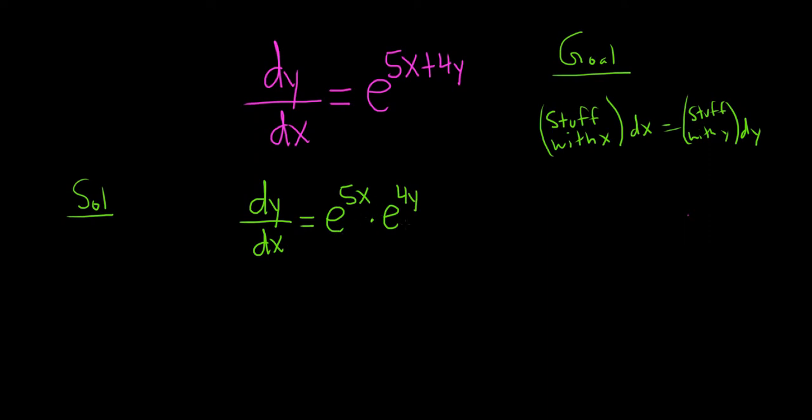So now maybe we can divide by e^(4y) and multiply by dx. When we do that, that puts us at dy over e^(4y) equals e^(5x) dx, right? Just taking the e to the left hand side over here and multiplying by dx.